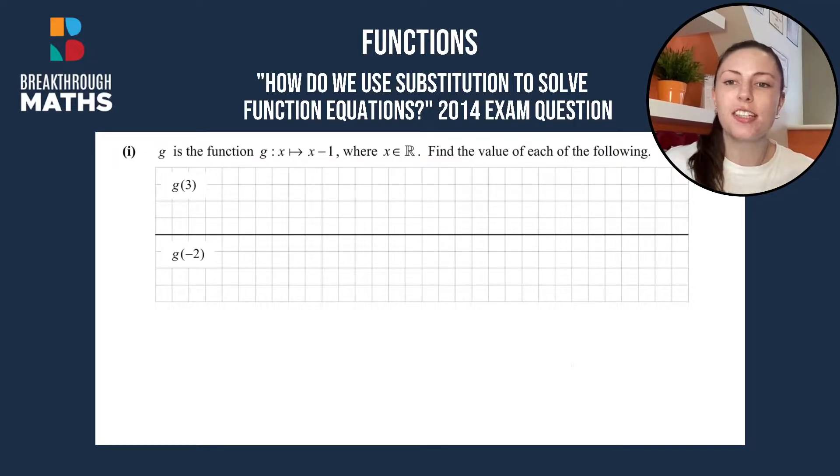So this question says that g is the function g(x) = x - 1, so that arrow just means equal to, where x is an element of or which is a real number. Find the value of each of the following.